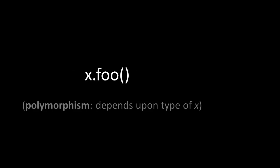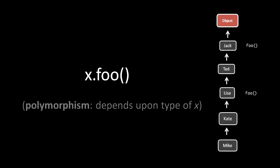Note that method calls are then naturally polymorphic. When we call x.foo, which method foo we're calling depends upon the type of x. Looking at the inheritance tree from our override example, if x is a Lisa, Kate, or Mike object, this will invoke the foo method defined in the Lisa class. If x returns an object of type Ted or Jack, this will invoke the foo method defined in the Jack class. The actual method being invoked changes based upon the type of the instance.